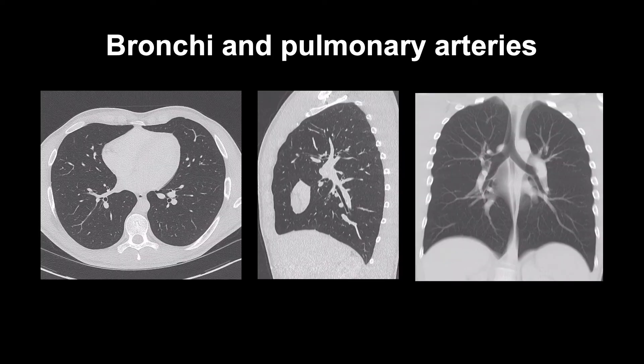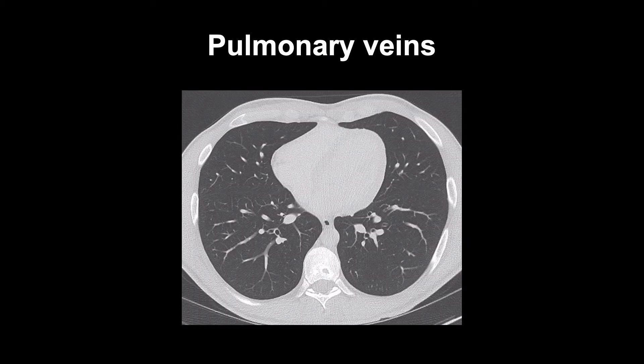Bronchi and pulmonary arteries run together and branch in parallel. Arteries divide into two branches of similar size, each smaller than the parent vessel. The airways and arteries smoothly taper as they move from the center to the periphery. Veins run independently of the arteries and airways, and also taper as they move peripherally. But rather than dividing into just two branches like the arteries, veins have multiple branches, generally at right angles to the parent vessel.